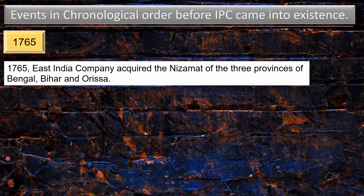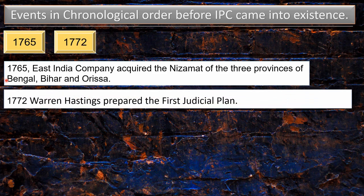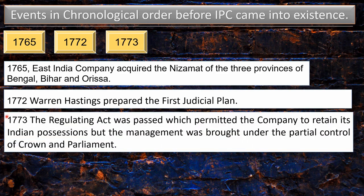In 1765, the East India Company acquired the Nizamath of the three provinces of Bengal, Bihar, and Odisha, giving them a stronger hold over India. Then in 1772, Warren Hastings prepared the first judicial plan — the first step towards judicial control in India. Then in 1773, the Regulation Act was passed, which permitted the company to retain its Indian position, but management was brought under the partial control of the Crown and the Parliament.